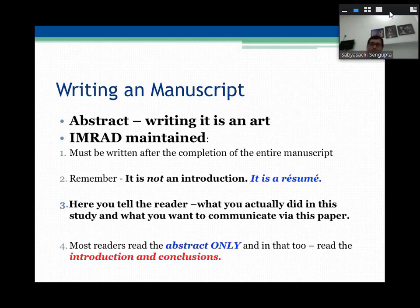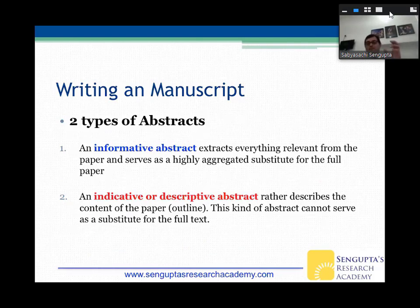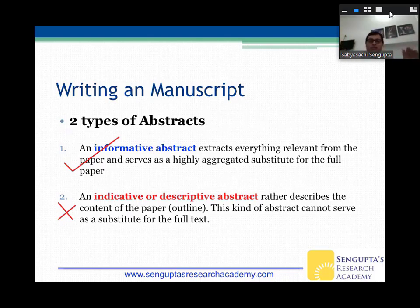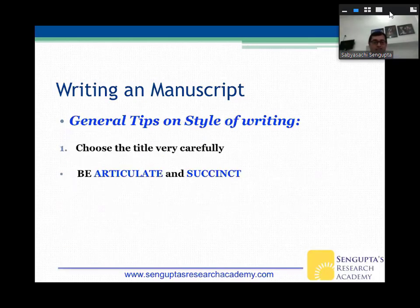Abstract writing is always an art and must be done at the end. The IMRAD structure is maintained; it must be written at completion. It's not an introduction but a résumé — within about 250 words, everybody should know exactly what you did, what you found, and the take-home messages. An informative abstract extracts everything relevant from the paper. An indicative or descriptive abstract merely describes the content outline — it's just indicative and doesn't give enough information. Always aim for an informative abstract.